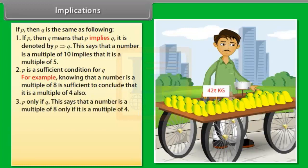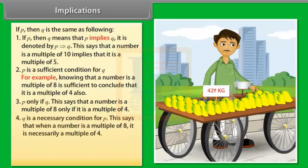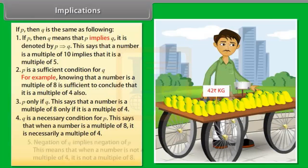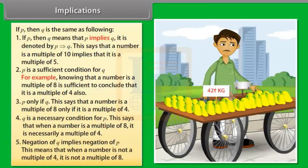P only if Q means a number is a multiple of 8 only if it is a multiple of 4. Q is a necessary condition for P — when a number is a multiple of 8, it is necessarily a multiple of 4. Negation of Q implies negation of P — when a number is not a multiple of 4, it is not a multiple of 8.